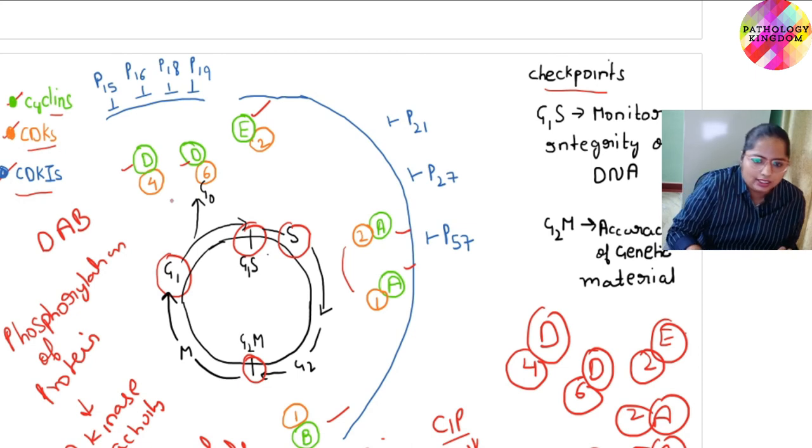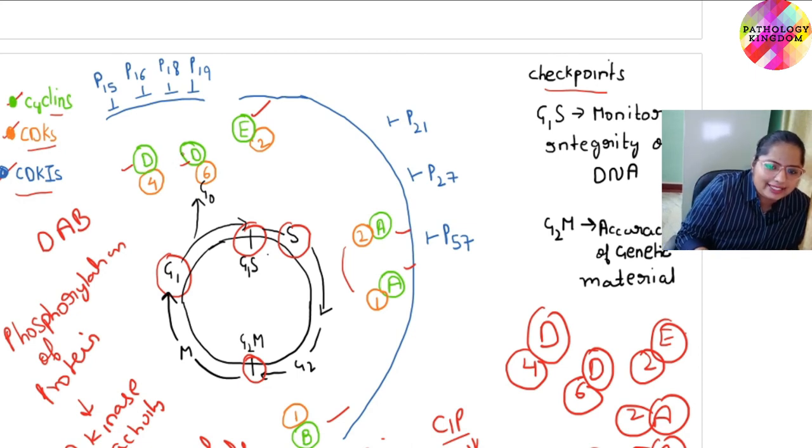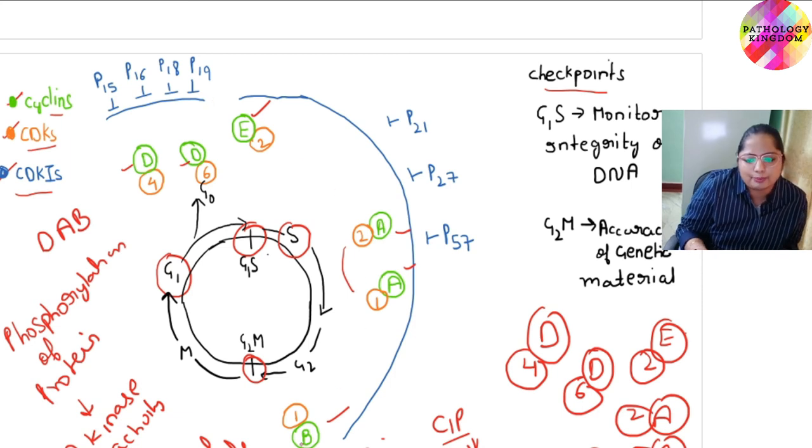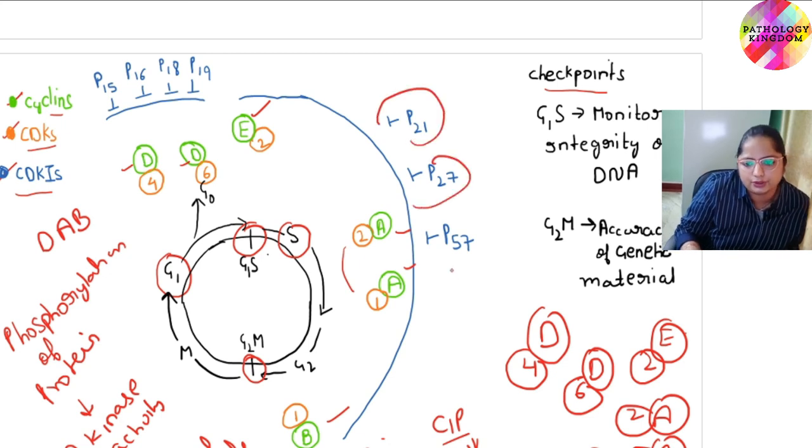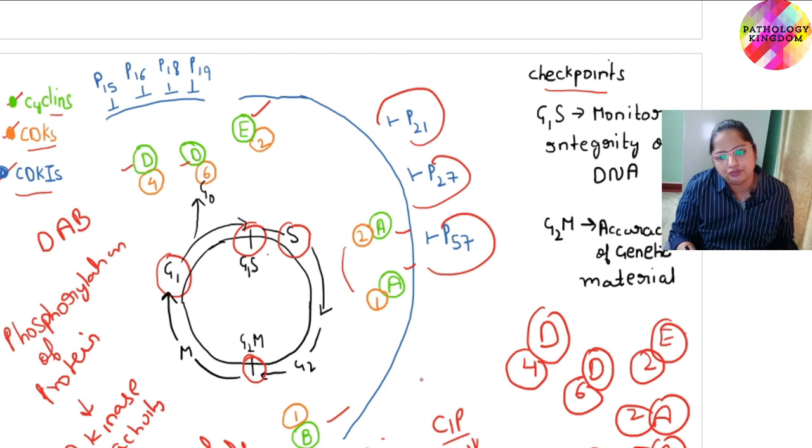Now the complex between Cyclin D and CDK4 and 6 is inhibited by P15, P16, P18, and P19. All other complexes are inhibited by P21, P27, and P57.